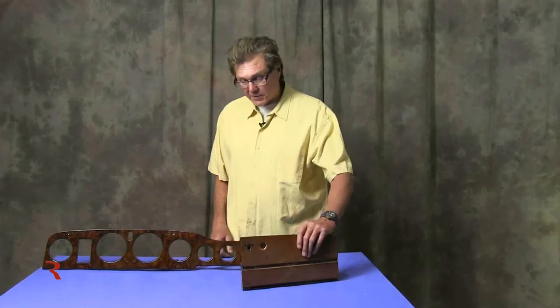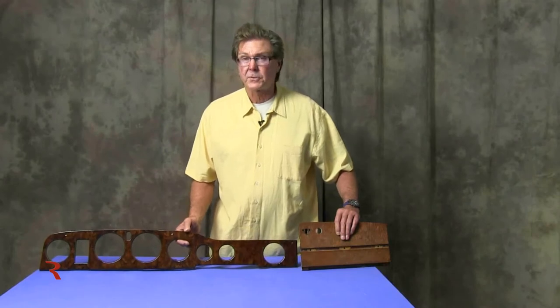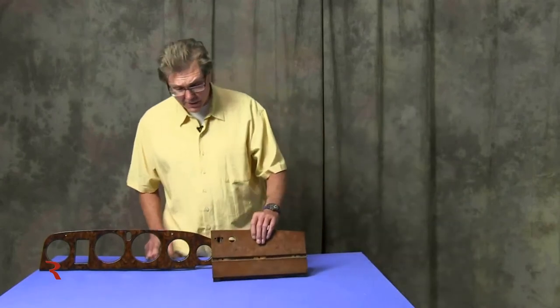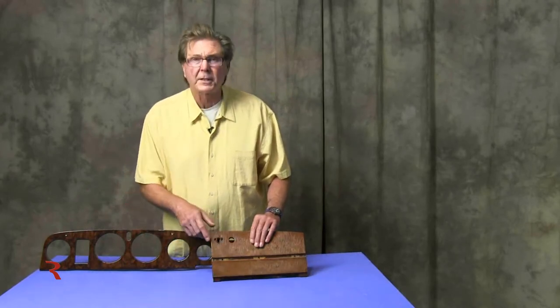And then this is the glove box which goes to the right side of the dash and it hasn't been refinished. It's a striking contrast between what it can look like and what it looked like when it came here.